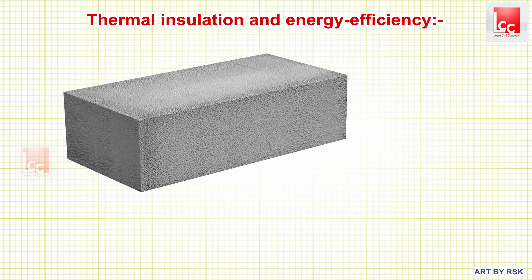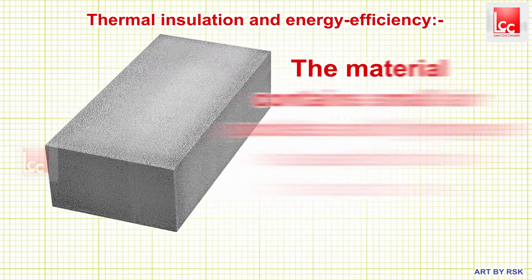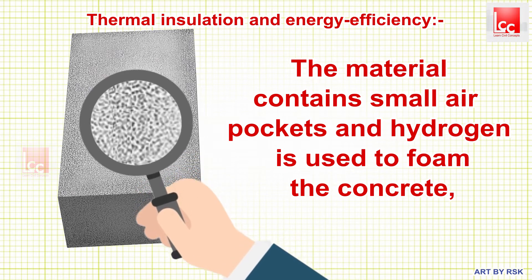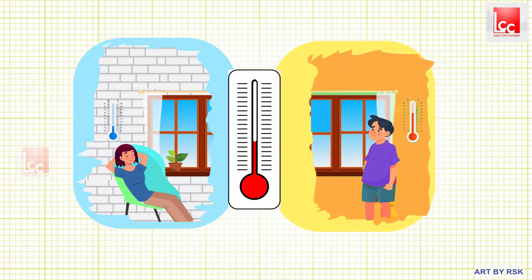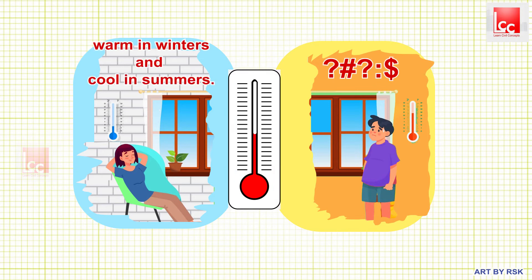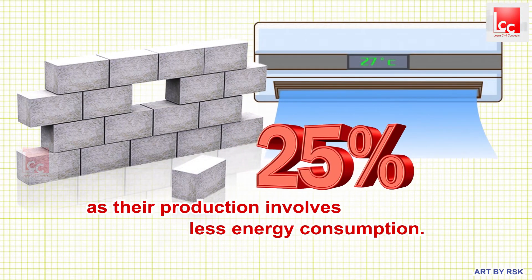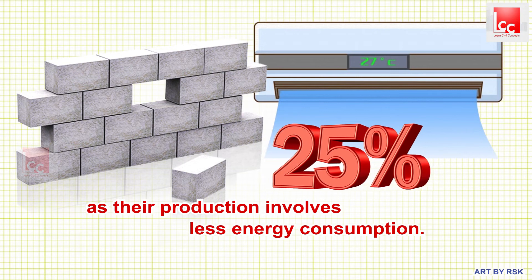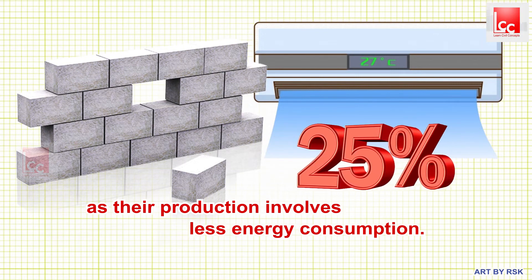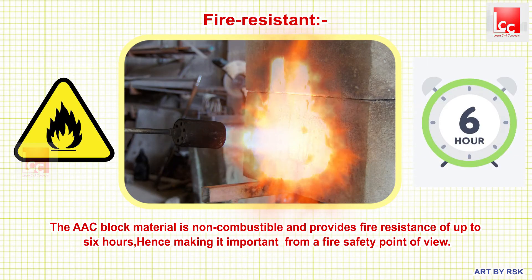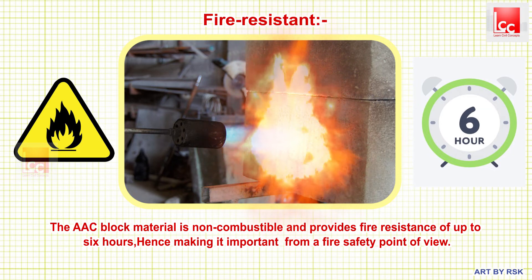Third, thermal insulation and energy efficiency. The material contains small air pockets, and hydrogen is used to form the concrete, giving it an excellent heat insulation property that allows temperatures to be warm in winter and cool in summer. This can significantly lower your air-conditioning cost by up to 25%. AAC blocks are energy efficient across their lifecycle as their production involves less energy consumption.